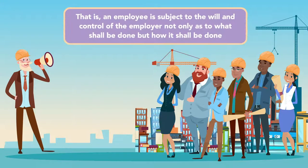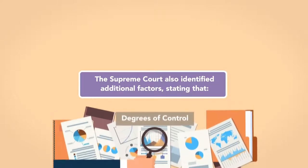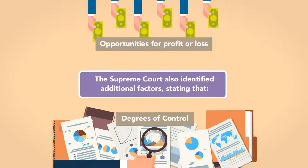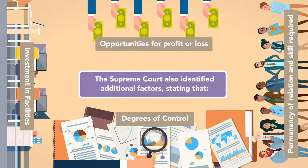That is, an employee is subject to the will and control of the employer, not only as to what shall be done, but how it shall be done. The Supreme Court also identified additional factors: degrees of control, opportunities for profit or loss, investment in facilities, permanency of relation, and skill required in the claimed independent operation are important for the decision. However, no one factor is controlling, nor is the list complete.